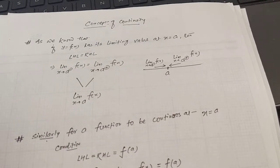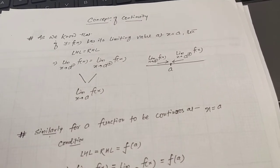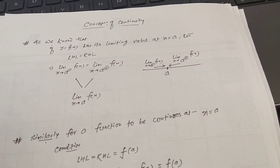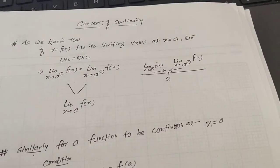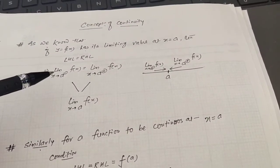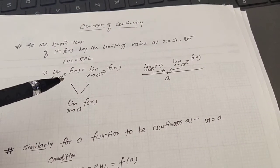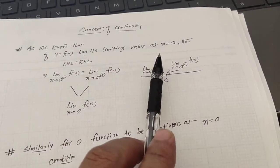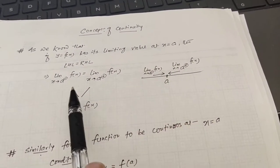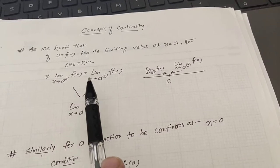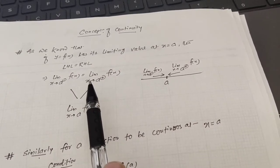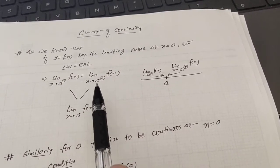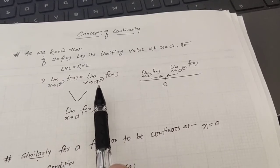Hello students. In Class 11 we have seen that if y equals to f(x) has its limiting value at x equals to a, then its left-hand limit and right-hand limit must be the same. Left-hand limit means limiting value when x tends to a minus — less than a — and right-hand limit means limiting value of the function when x tends to a plus, meaning something greater than a.